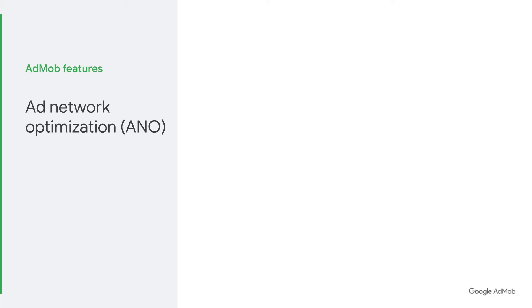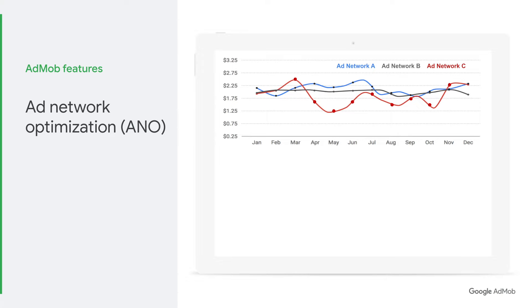As a quick refresher, Mediation helps you earn more by managing all of your app's ad sources in one place. AdMob has a few key features that help with that. The first feature is called Ad Network Optimization, or ANO. It works by pulling the freshest eCPM values from each ad network you work with based on historical performance, using each network's reporting APIs.